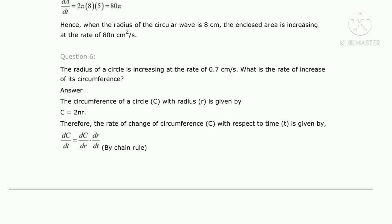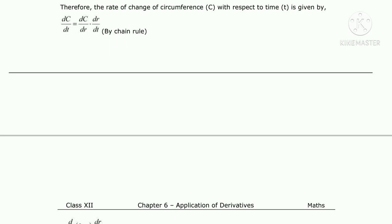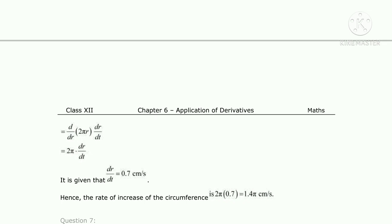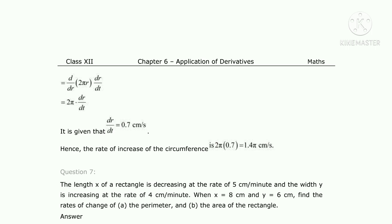No need to use the chain rule explicitly here — we can directly write dC/dt = 2π · dr/dt. The dr/dt value is already given as 0.7 cm/s. So the rate of increase of the circumference is 2π × 0.7 = 1.4π centimeters per second.